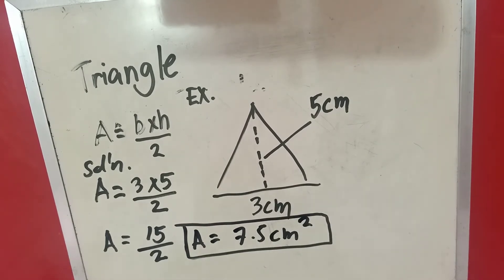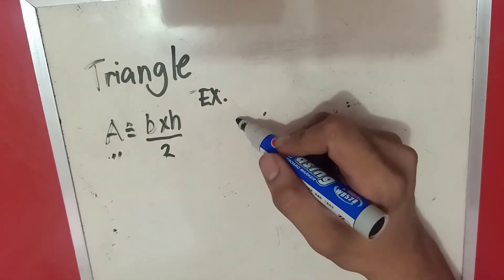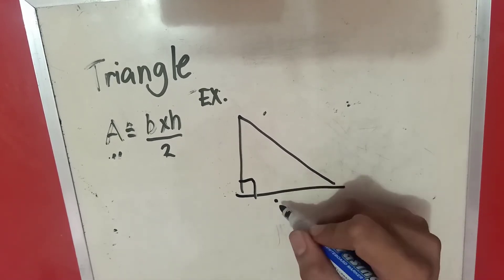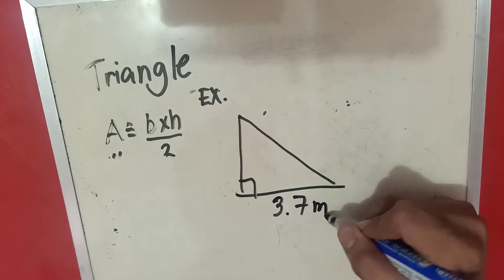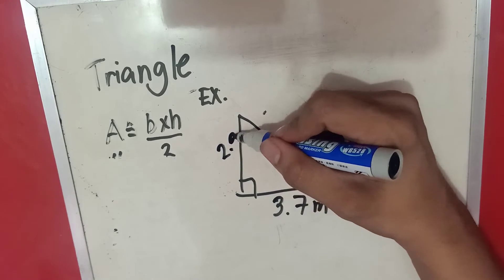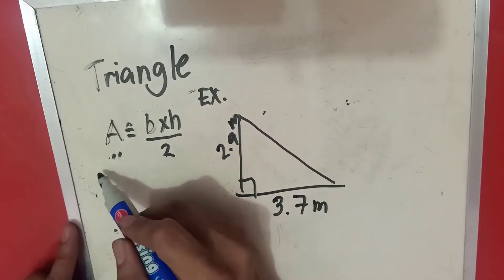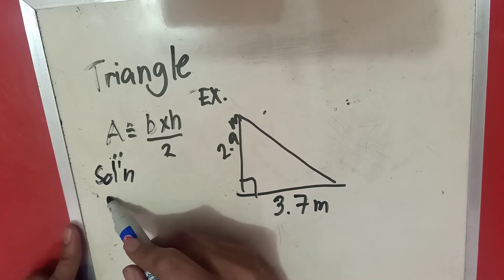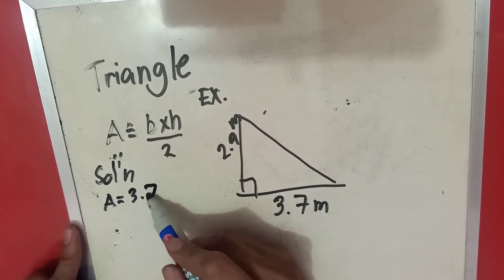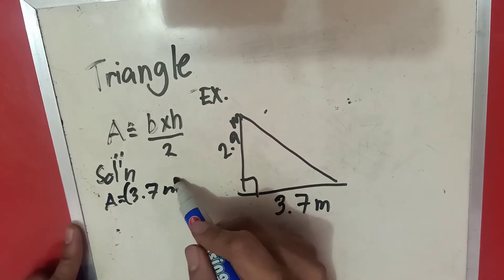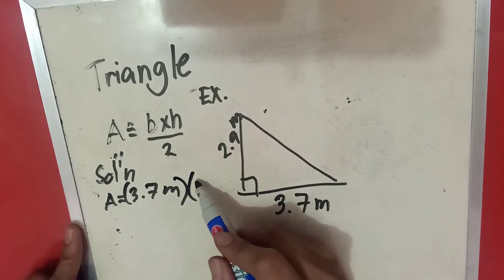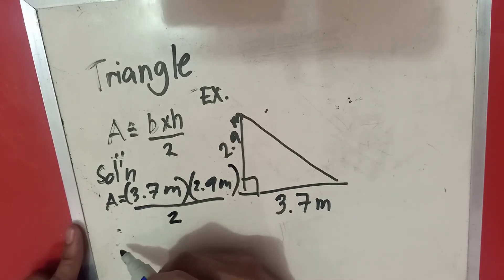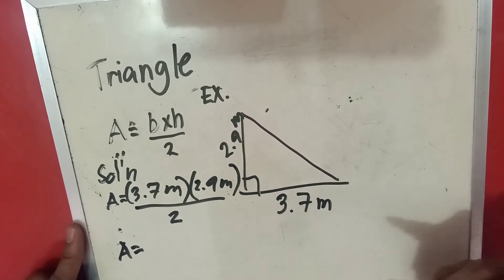Let's have another example. We have a right triangle — a 90-degree triangle — with a base of 3.7 meters and a height of 2.9 meters. Now let's substitute the given values: base is 3.7 meters and height is 2.9 meters, over 2.